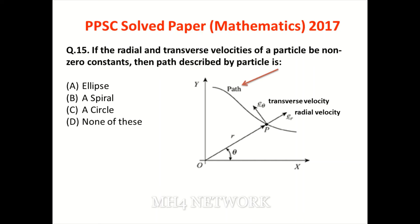Path agar curve ho toh second degree ya higher hoga. Agar path first degree ho toh time ke saath derivative — radial velocity — constant aayegi, jo question ne poocha hai (non-zero constant). First degree curve bilkul seedha hoga jaise ek line. Is point ke according path ko observe karte hain — velocity constant hai, to yeh circle ban jaayega. Option C is the correct answer.